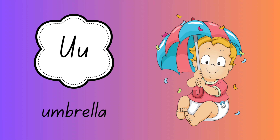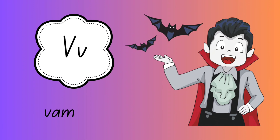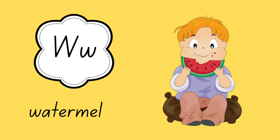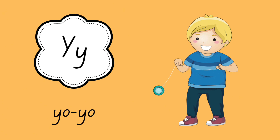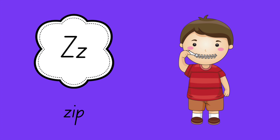U for umbrella. U-M-B-R-E-L-L-A. V for vampire. V-A-M-P-I-R-E. Vampire. W for watermelon. W-A-T-E-R-M-E-L-O-N. Watermelon. X for x-ray. X-R-A-Y. Y for yo-yo. Y-O-Y-O. Z for zip. Z-I-P. Zip.